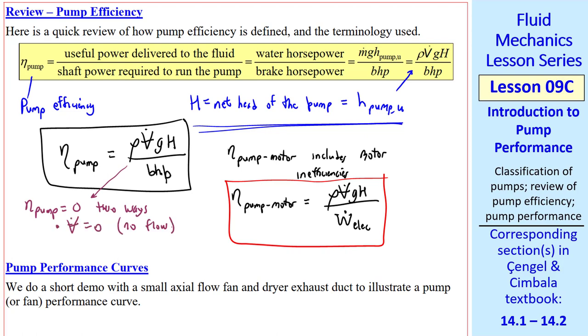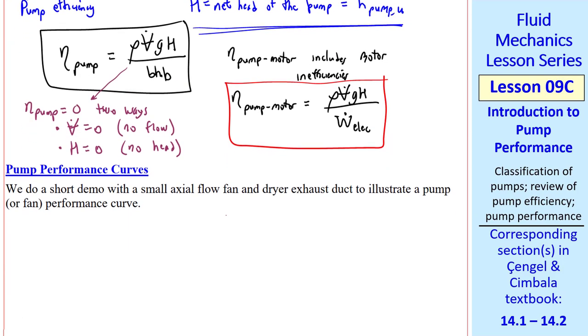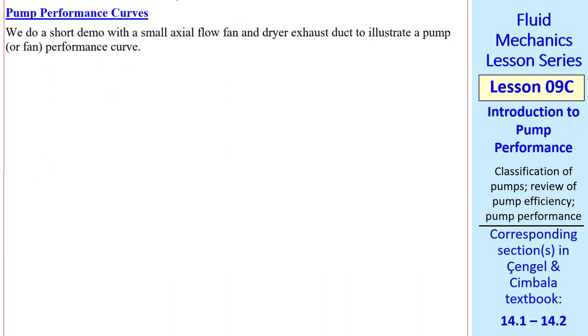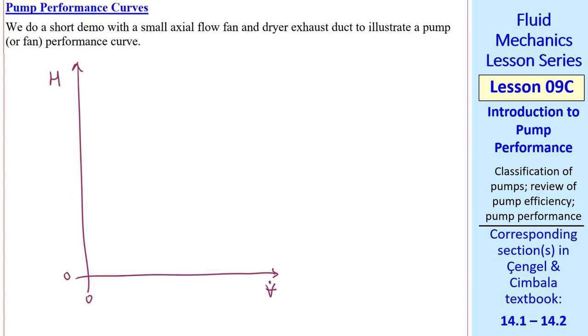Just looking at the numerator, if V dot is equal to zero, in other words, there's no flow, or H equals zero, in other words, there's no head. This leads us to the pump performance curves. We'll do a short demo with a small axial flow fan and a drier exhaust duct to illustrate a pump, in this case a fan, performance curve. I'll set up our axes. The horizontal axis is volume flow rate, and the vertical axis is net head. You could also use pressure there, the pressure rise across the pump or the fan. Now let's do the demo.